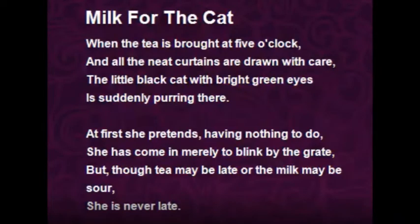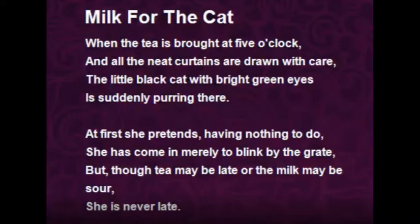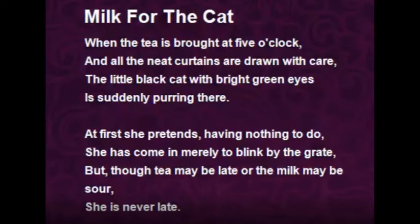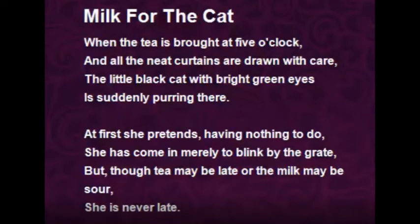In the first paragraph, the poet explains that when the tea is made at 5 o'clock and the curtains are still drawn, the cat appears by the window with its green eyes glowing, waiting patiently for her tea. At first, she pretends to have nothing to do — she has come in merely to blink by the grate. But though tea may be late or the milk may be sour, she is never late.